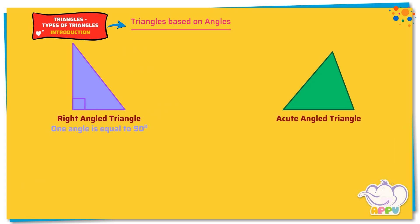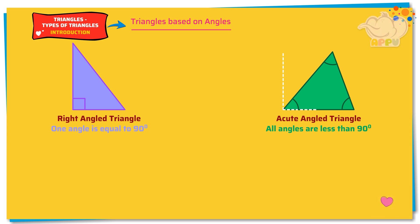Acute angled triangle. An acute angled triangle is a triangle that has all the angles less than 90 degrees. Imagine two perpendicular dotted lines at the angle. An angle is less than 90 degrees if it is between the two dotted lines.